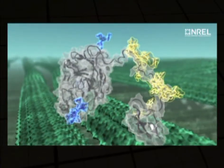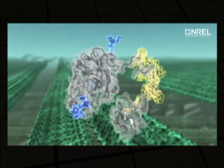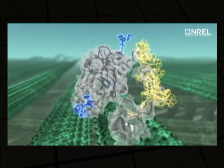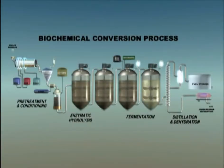Biochemical conversion uses enzymes and microorganisms to convert biomass into sugars, and those sugars into biofuels or bioproducts that can replace products currently made from crude oil.